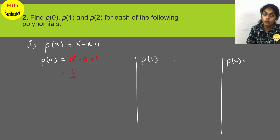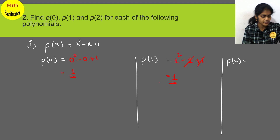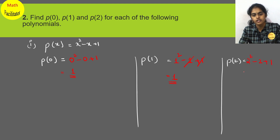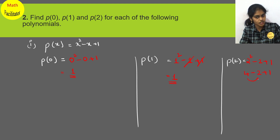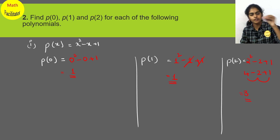To find p(1), substitute 1 in place of x: 1² minus 1 plus 1. The minus 1 and plus 1 cancel, leaving 1² which equals 1. Now substitute 2: 2² minus 2 plus 1 equals 4 minus 2 plus 1 equals 3. Simply substitute the given value in place of x and solve.